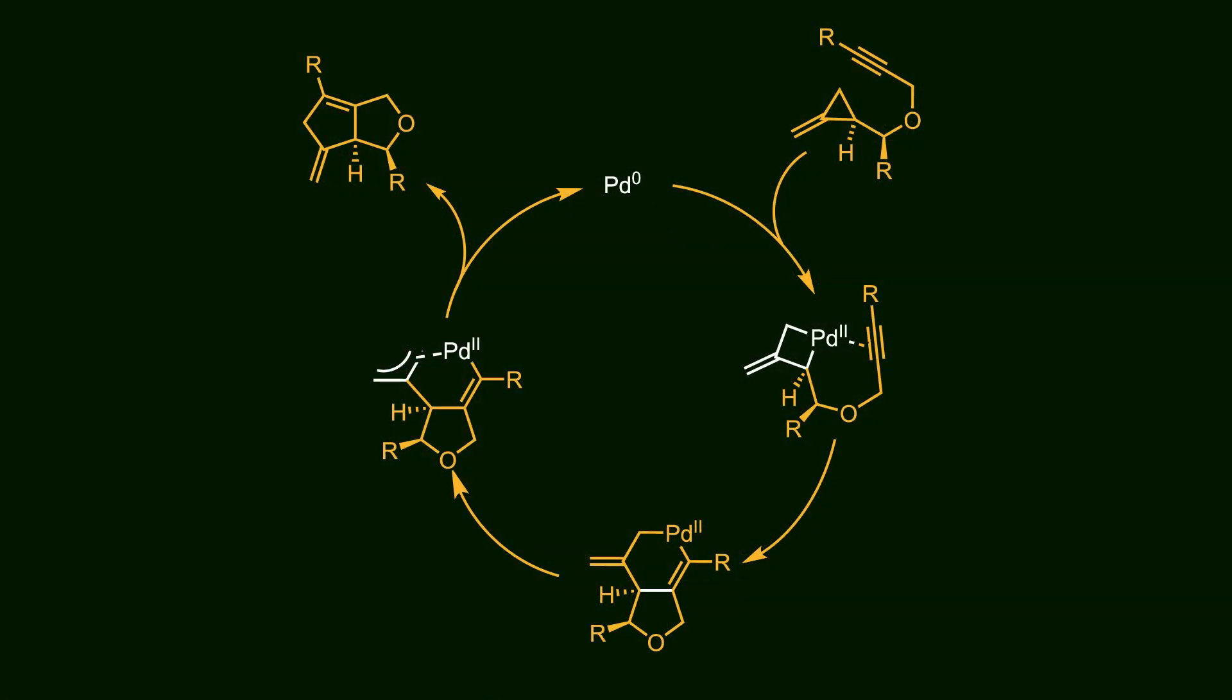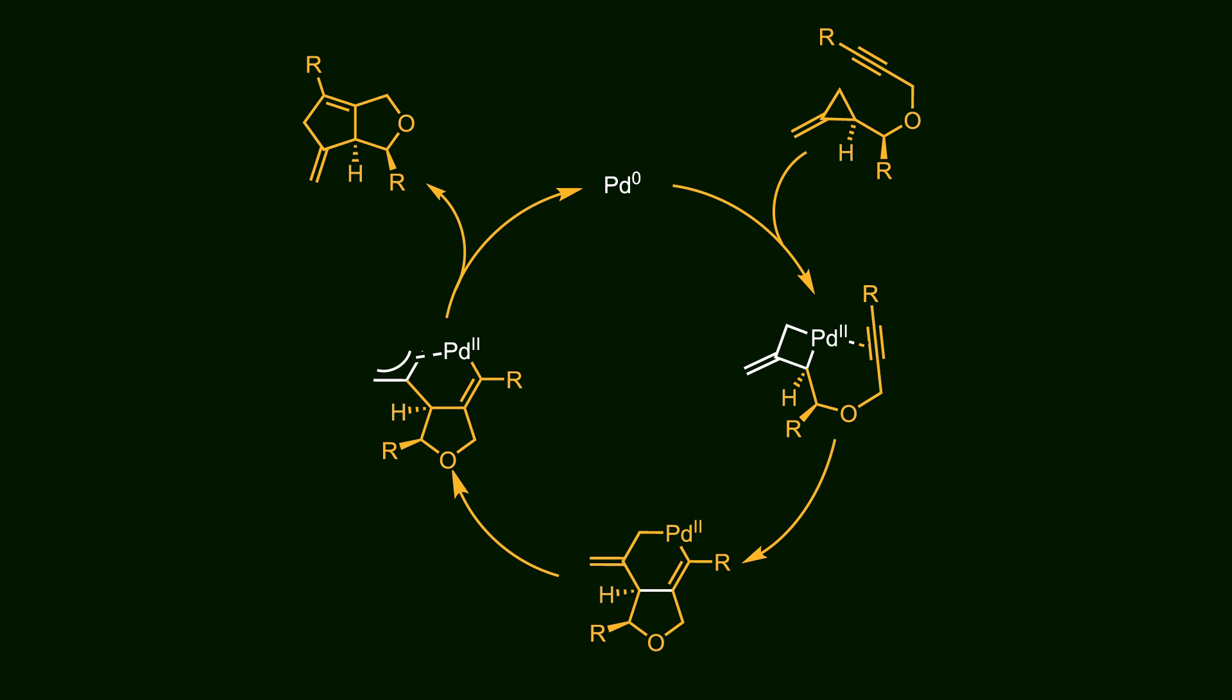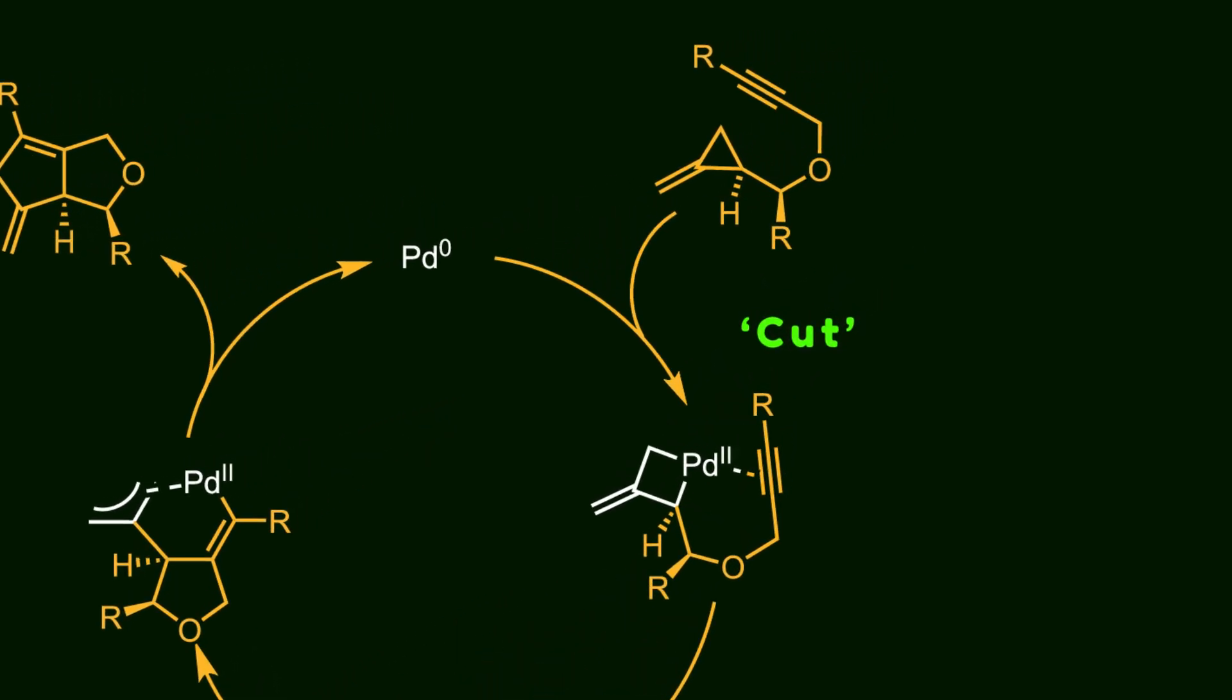To better understand, let's see the reaction mechanism. During the cut process, palladium inserts to the distal bond and coordinates to alkyne on the other side of the molecule. As a result of this oxidative addition, palladium zero is converted to palladium plus two.